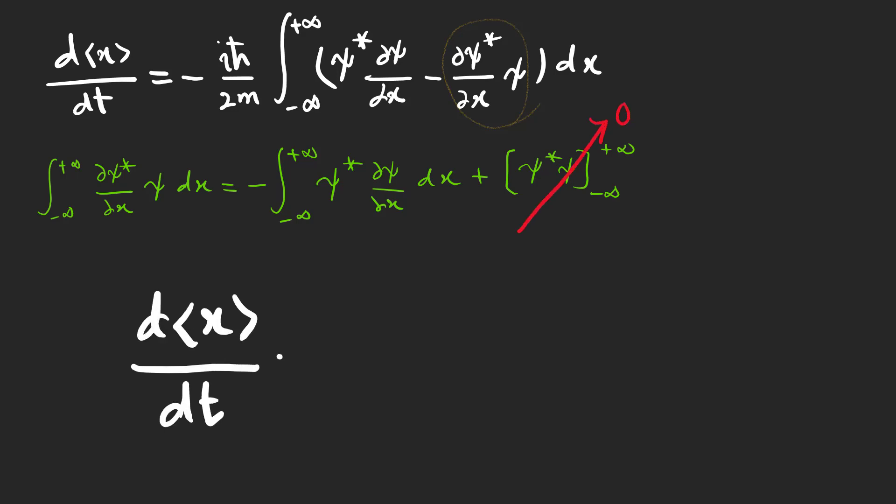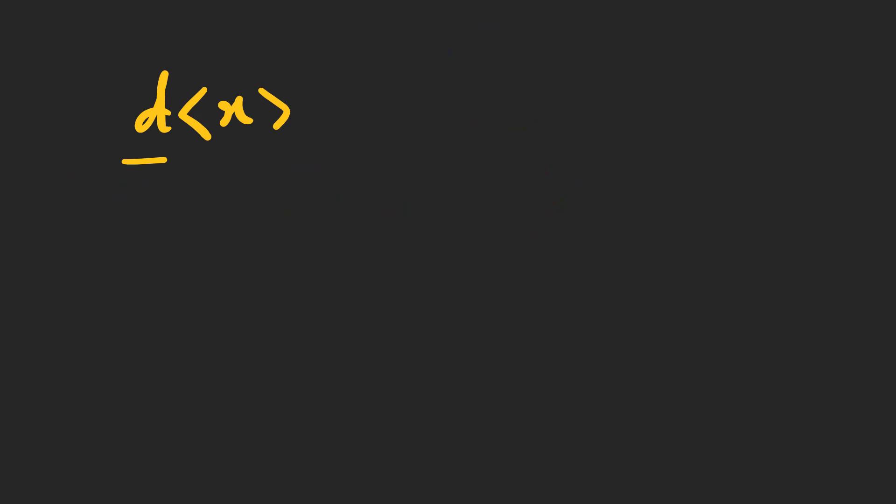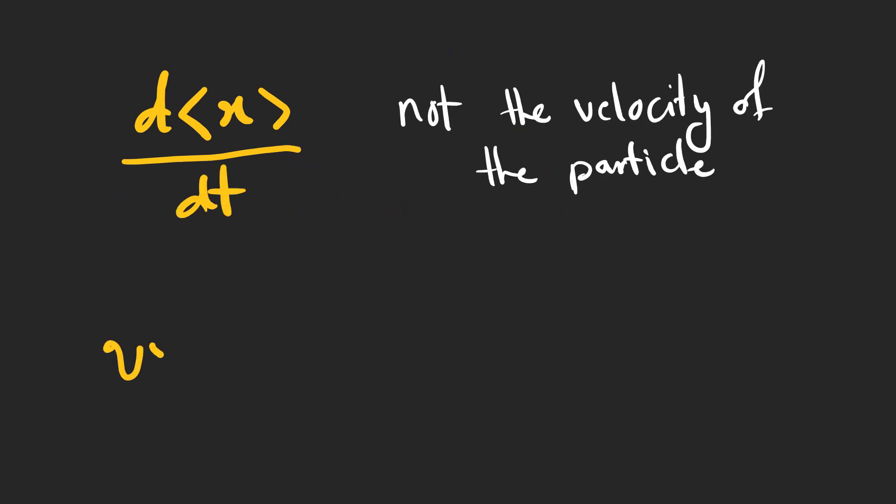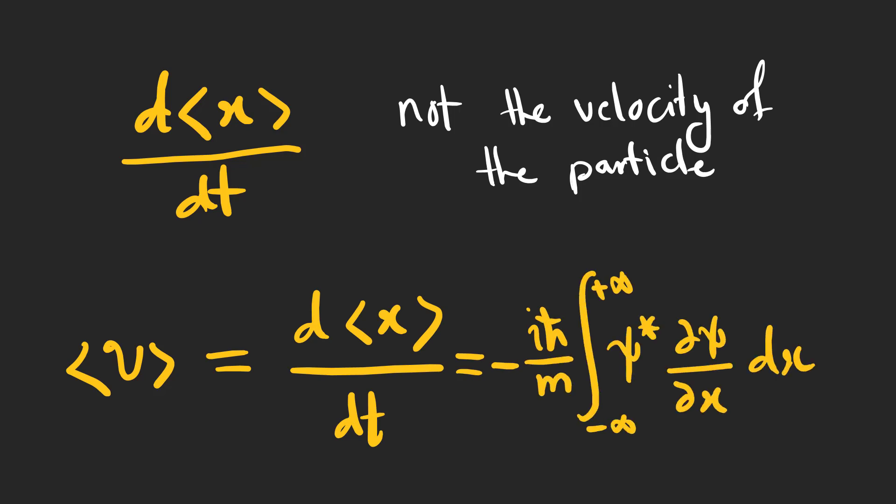And finally for the time evolution of the expectation value of x, we can write this expression. Pay attention that this is not the velocity of the particle. But we can say that the expectation value of the velocity is equal to the time derivative of the expectation value of position.